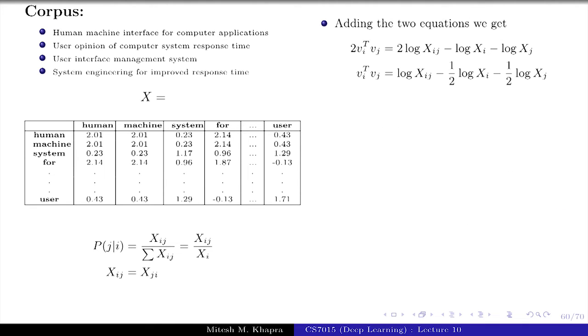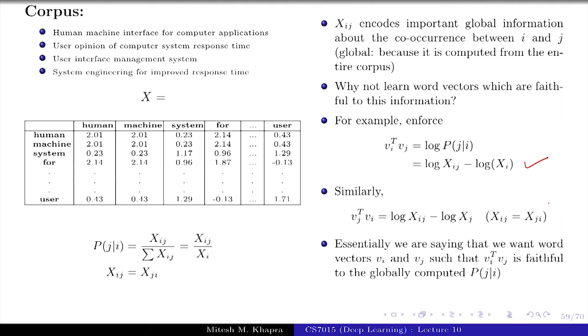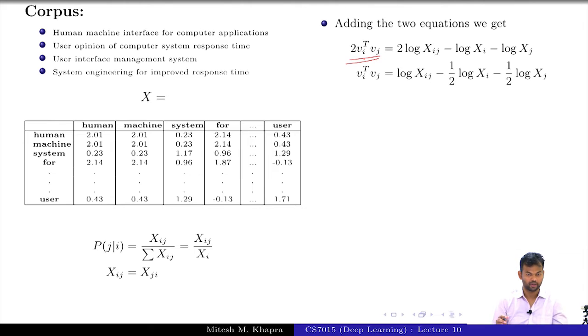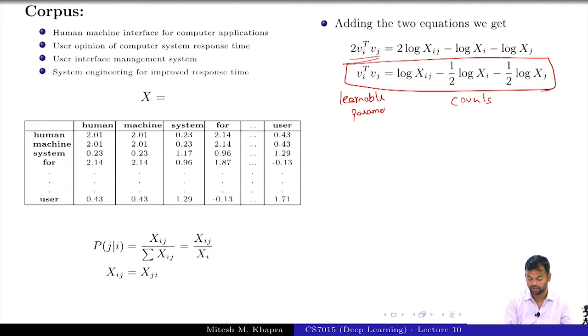Now, if I add these two equations. So I am going to add this equation and this equation. The left hand side I just get two times V_I transpose V_J because V_I transpose V_J is the same as V_J transpose V_I, and on the right hand side I get certain quantities. So this is what I would actually want my word vectors to look like. I would want my word vectors to be such that when I take their dot product they give me the quantity on the right hand side, and this quantity has come based on counts learned from the corpus. So I have counts on the right hand side and I have learnable parameters on the left hand side.